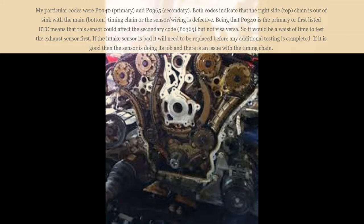Being that P0340 is the primary or first listed DTC means that this sensor could affect the secondary code P0365, but not vice versa. So it would be a waste of time to test the exhaust sensor first.